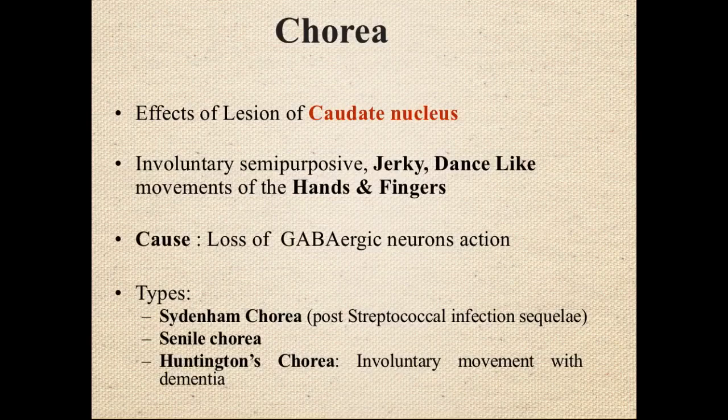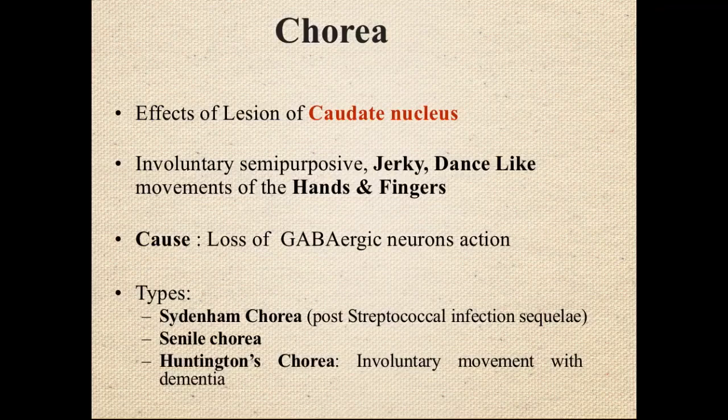Chorea — 'C' for chorea, 'C' for caudate nucleus — involves involuntary, semi-purposive, jerky, dance-like movements of the hands and fingers. It occurs due to loss of GABAergic neurons. If GABAergic neurons in the substantia nigra are lost, the resulting disinhibition causes exaggerated, uncontrolled movements.